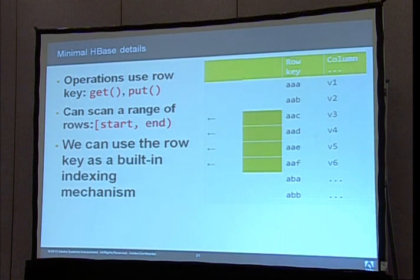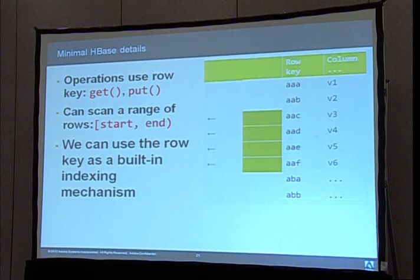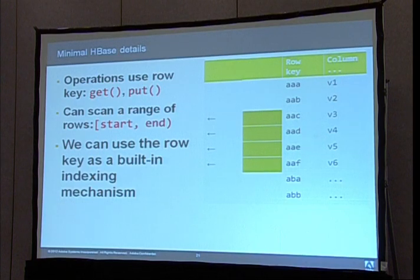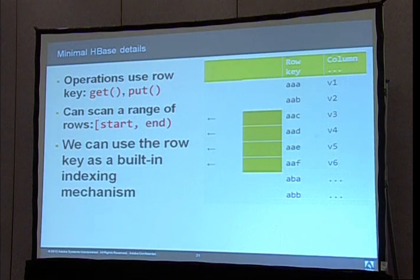At the core, most operations use the row key. You can either get or put data to a row, and both functions use the row key to identify the row. Another fundamental operation is scanning a range of rows between a start row and an end row. This makes sense because rows are ordered by the row key — so given an ordering relation, we can say: start from row AA and get me all the data until row BC.